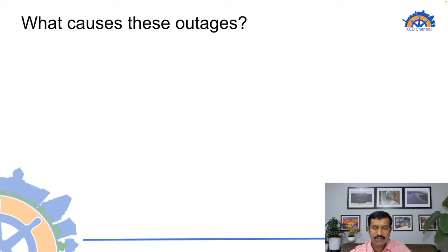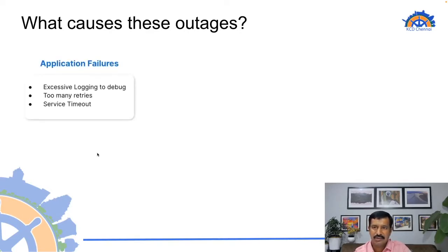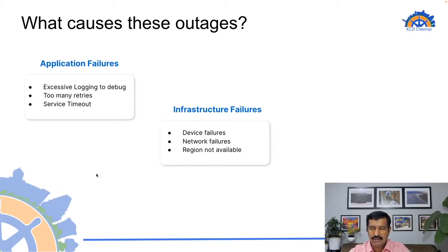So what causes these outages? It's not really one thing but a set of things. There can be application failures — something gets filled up because of logging, a service stomping can happen. We have also seen infrastructure failures causing outages. Most of the time there is redundancy, but you never know — when there is an infrastructure failure, things start to fail elsewhere.